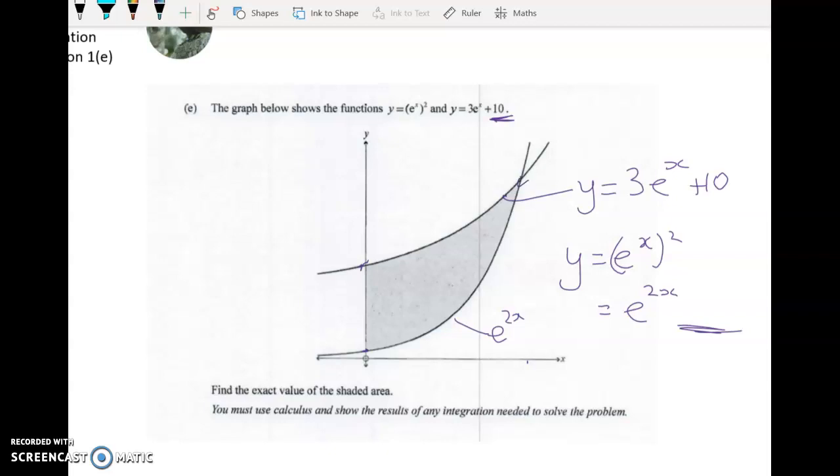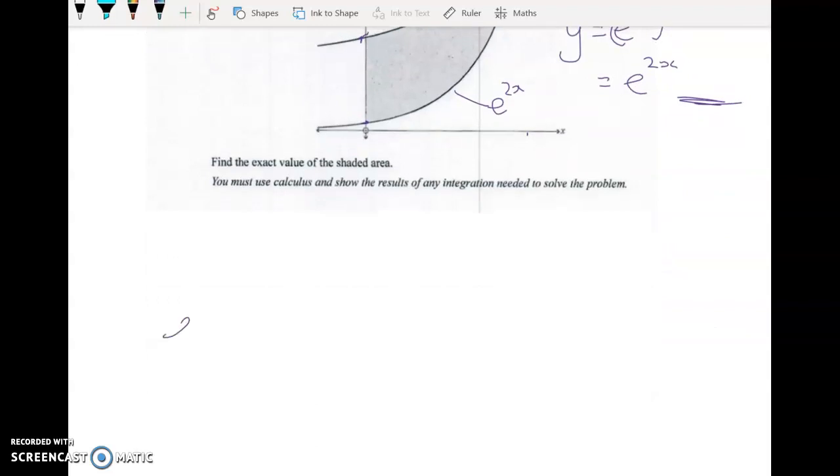So the first thing we have to do is figure out what's this point here, or at least what's the x-coordinate of that point there. We're going to do that by equating the two y values. So e to the 2x is equal to 3e to the x plus 10.